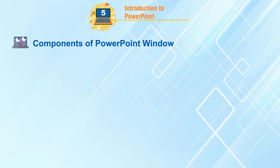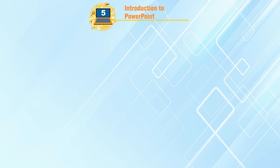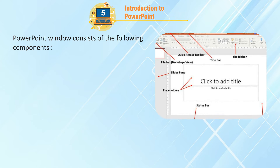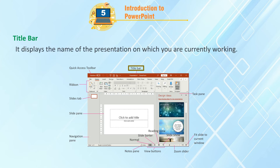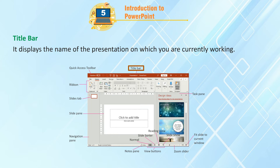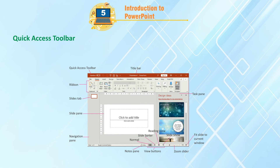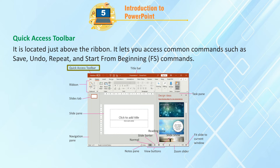Components of the PowerPoint window: The PowerPoint window consists of the following components. Title Bar: It displays the name of the presentation on which you are currently working. Quick Access Toolbar: It is located just above the ribbon and lets you access common commands such as Save, Undo, Repeat, and Start from Beginning (F5).